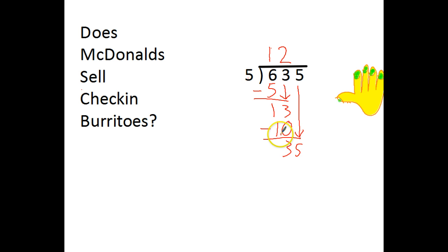How many 5's in 35? 5, 10, 15, 20, 25, 30, 35. There's 7 of them. And 7 times 5 equals 35. When I subtract, nothing left. So 635 divided by 5 is 127.